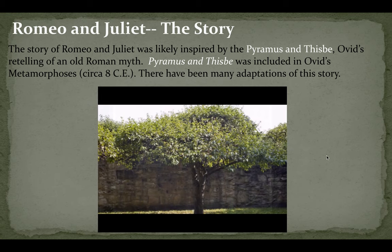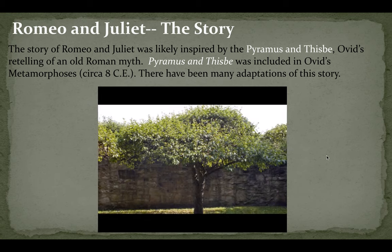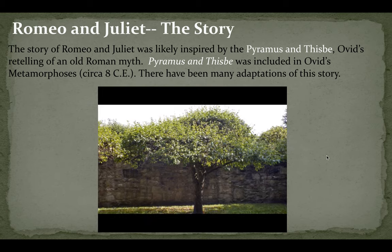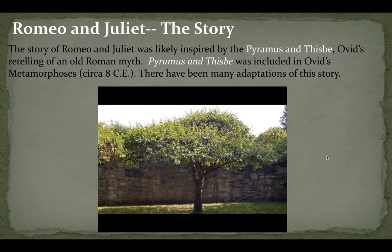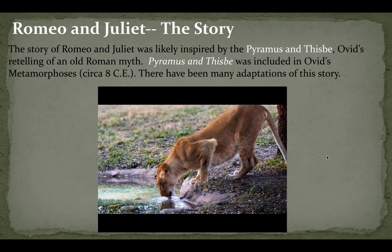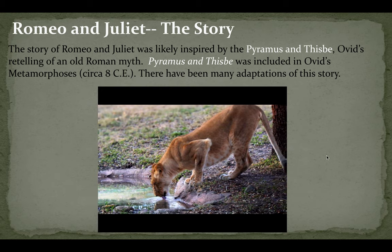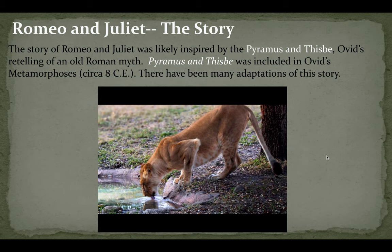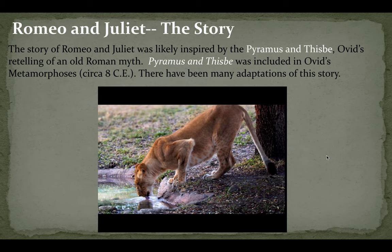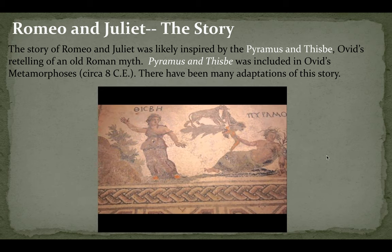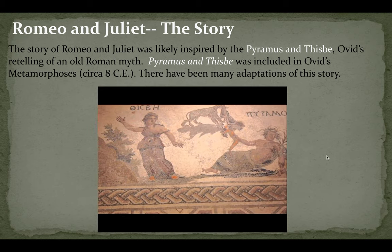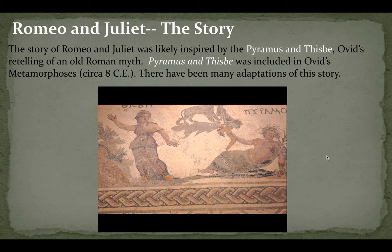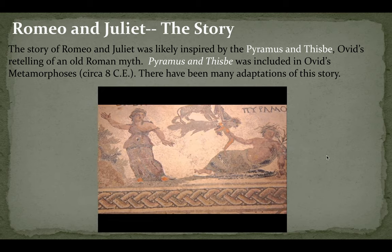They agreed to meet that night beneath a mulberry tree outside the city gates. When night fell, Thisbe managed to sneak out first, her face hidden by a veil, and she came to the meeting place. As she waited for Pyramus, a lioness arrived, having just killed some prey near a stream alongside the mulberry tree. Frightened, Thisbe hid inside a nearby cave, but in her haste she dropped the veil, which the lioness shredded with her bloody jaws. It was then that Pyramus arrived and scared off the lioness. When he saw Thisbe's bloody and torn veil on the ground, he assumed the lioness had killed her. Distraught, Pyramus drew his sword and plunged it into his stomach, staining the white fruit of the tree with his blood.